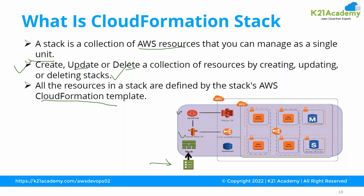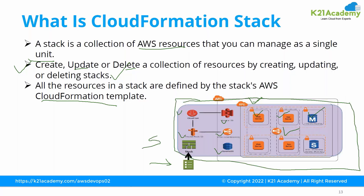As you can see in the diagram, using a single stack we are creating Route 53, CloudFront, S3, load balancer, DynamoDB, EC2 virtual machines, RDS, and VPC. Everything here is considered a single stack. If I need to make changes to any of these resources, I update the code for that resource and update the stack — it will update only the respective resources without affecting the rest.